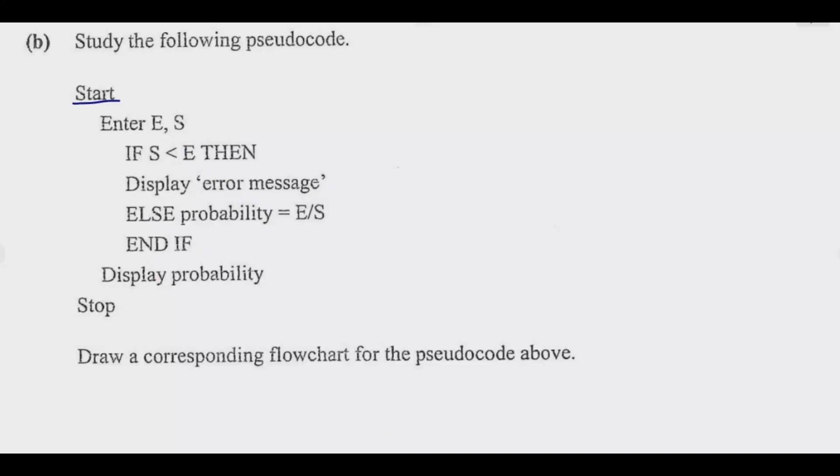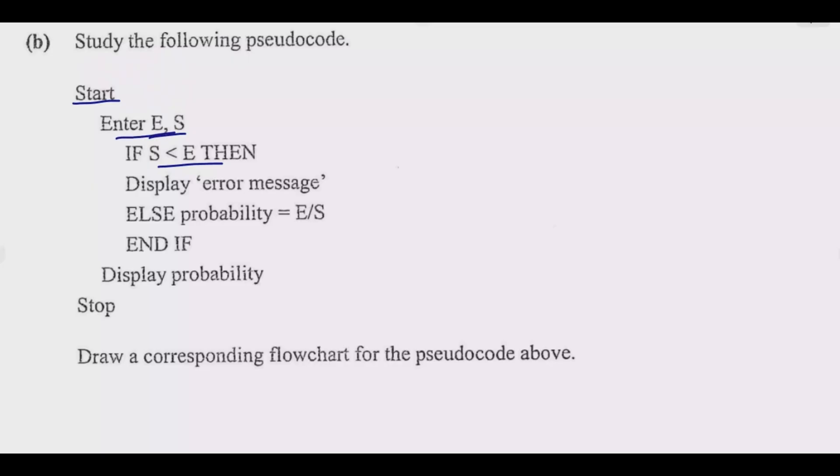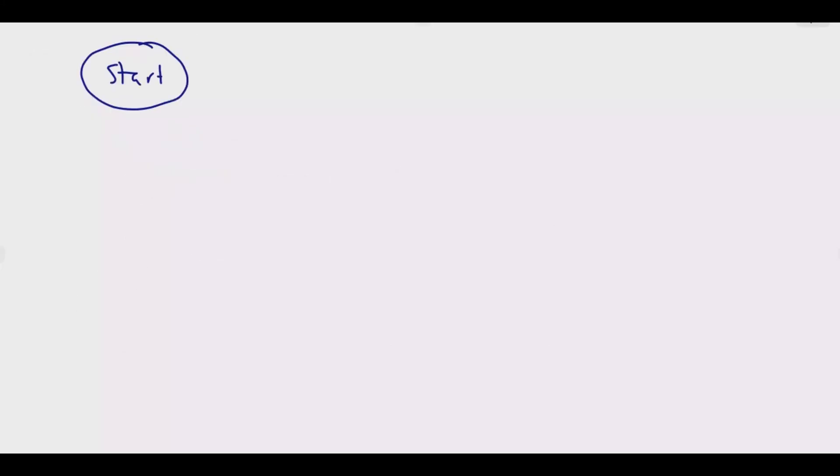We move to question b. At this point we have the start. Then we have enter this. Let me use a cleaner space. So start, we use this symbol, this shape. We put start there. Then after we start, we're required to enter. What are we entering? We're entering this. So for entering, we use this shape. We are entering e and s, e comma s.